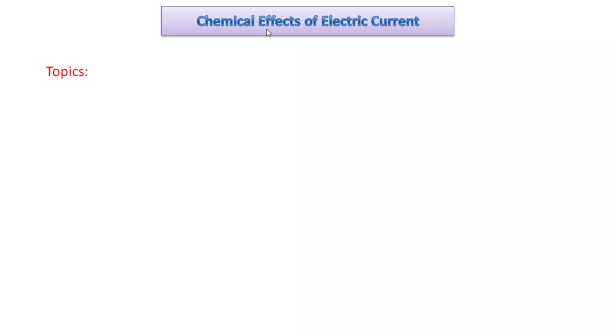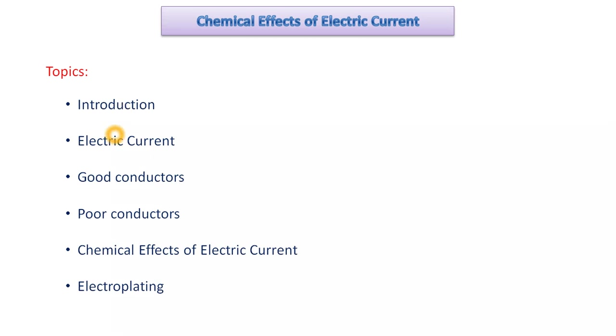We are going to start a new chapter: Chemical Effects of Electric Current. Topics to be discussed include an introduction, electric current, good conductors and poor conductors of electricity, chemical effects of electric current, and finally electroplating.